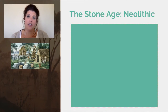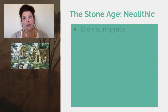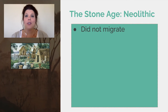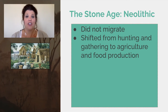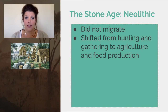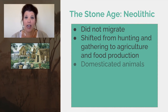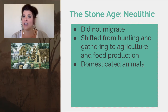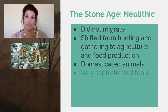Eventually we reached the Neolithic era, which is the new Stone Age, and this is a really exciting time in history because it changes everything. People stopped migrating and shifted from hunting and gathering to being food producers. They got into agriculture — farming and herding animals — and domesticated animals like dogs, sheep, chickens, and cows.